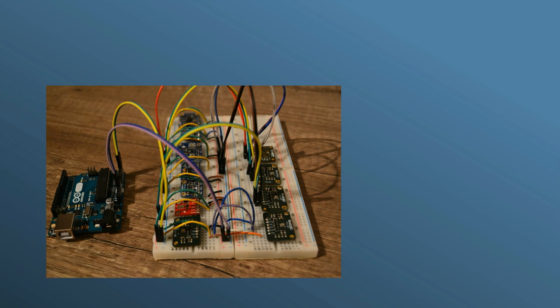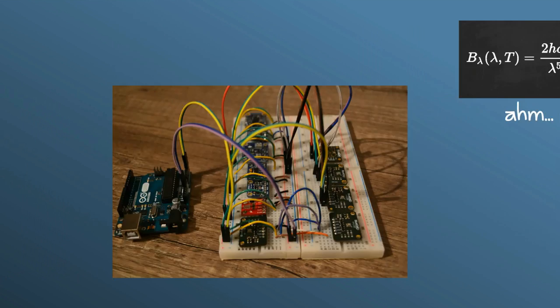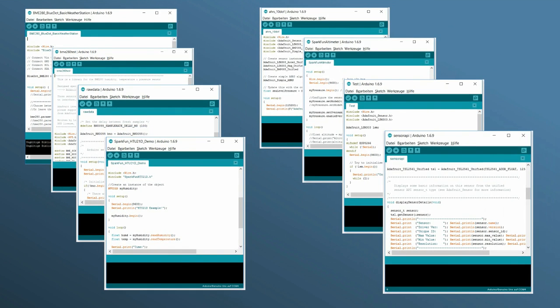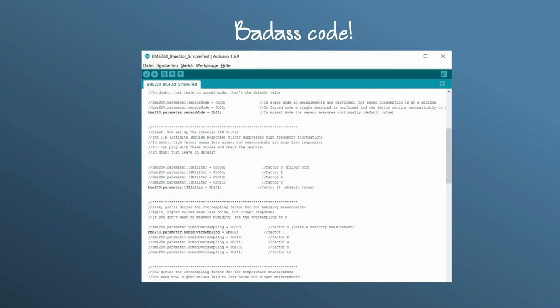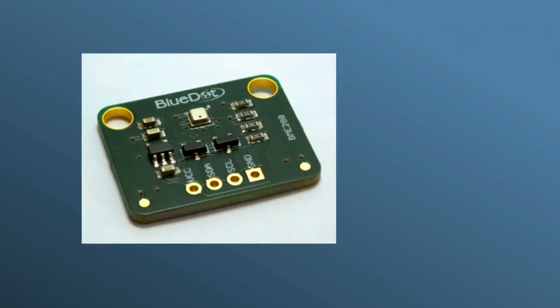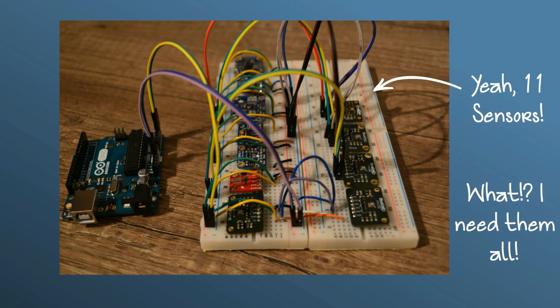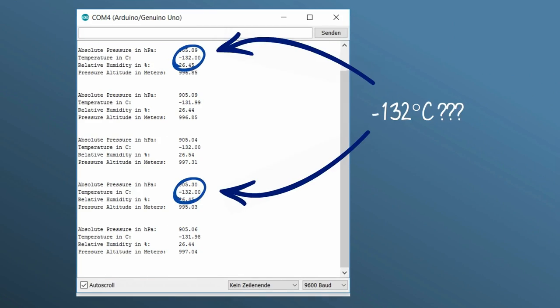But using several devices at the same time is much more complicated. And I'm not even talking about the challenge of programming all of them into the same code. The problem lies on the hardware. Depending on the number of devices on your I2C bus, you may get to a point where you no longer get meaningful data from the sensors.